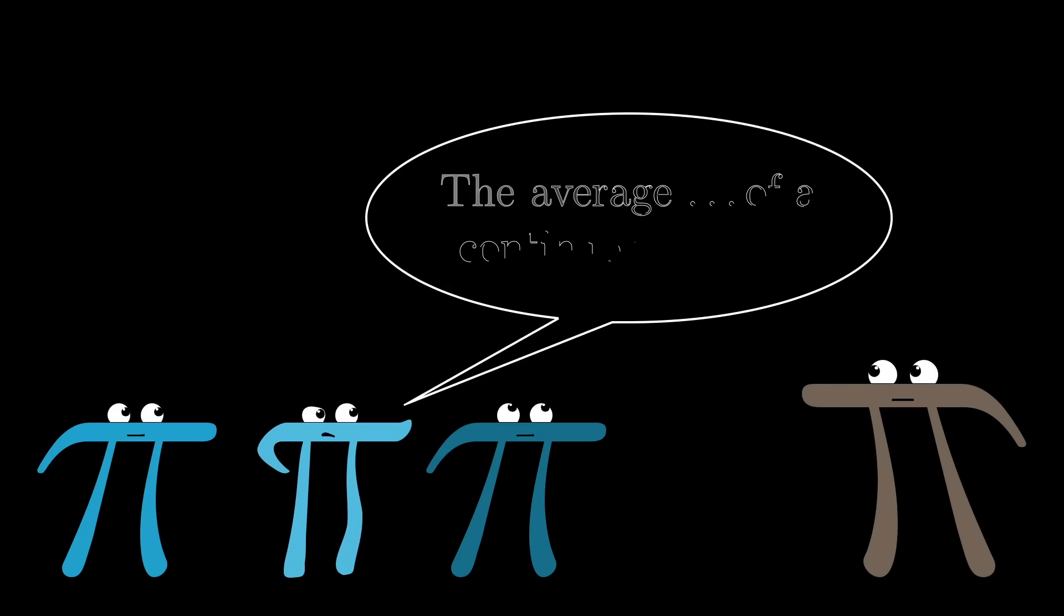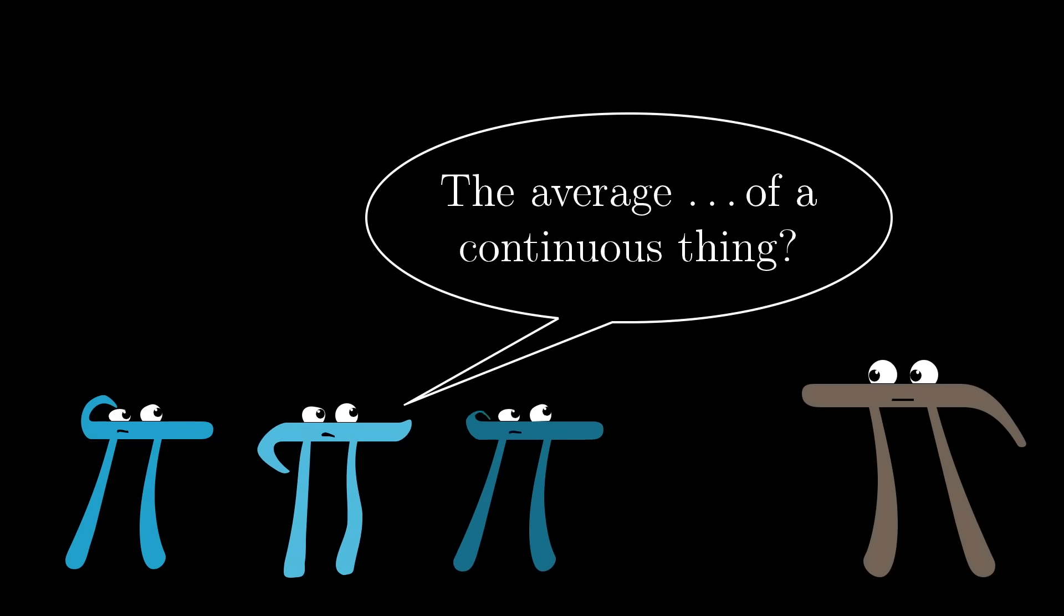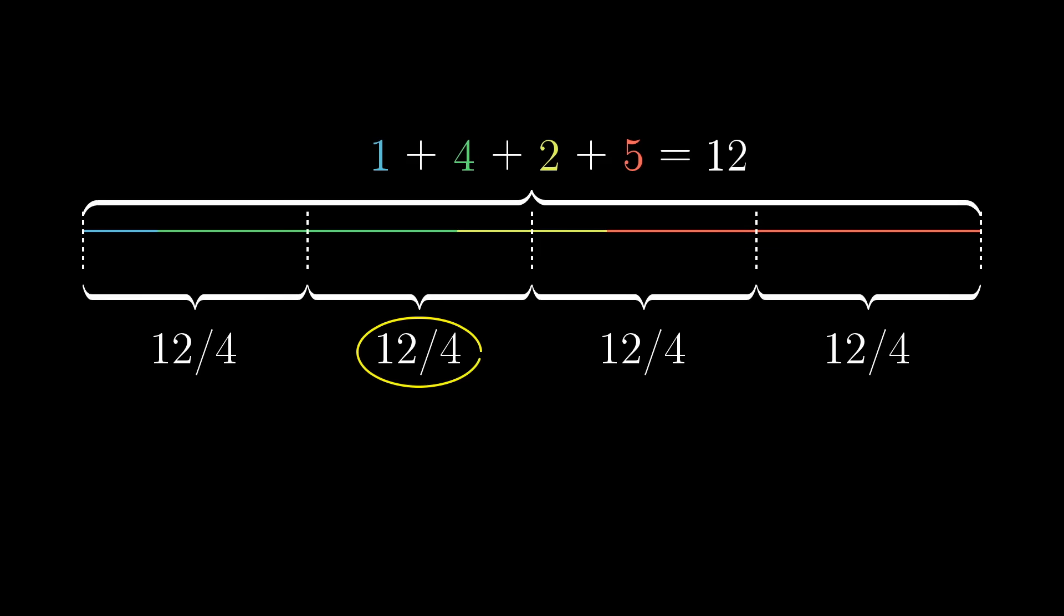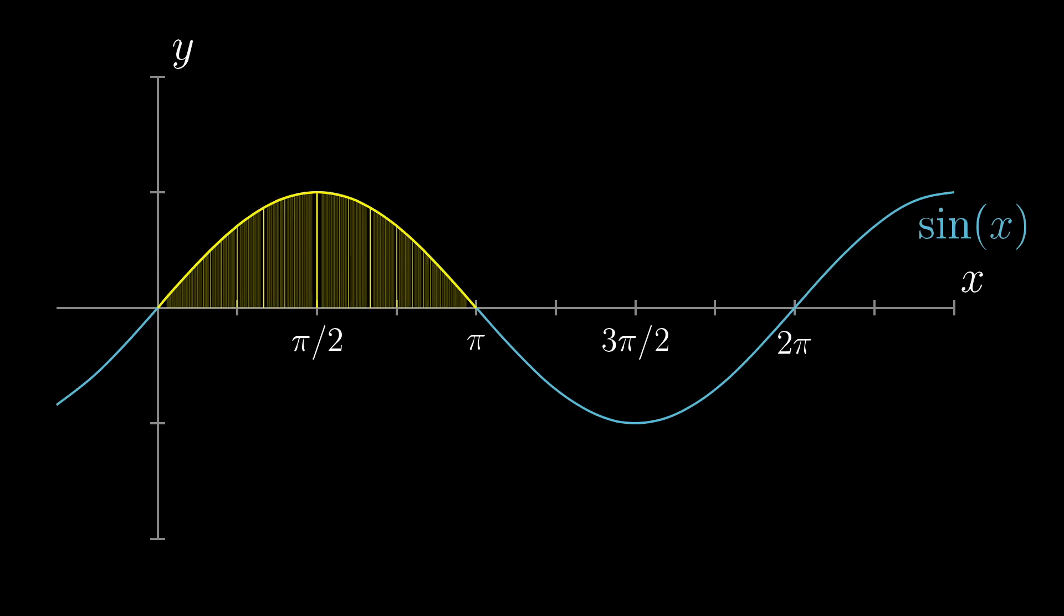It's kind of a weird question to think about though, isn't it? The average of a continuous variable. Usually with averages we think of a finite number of variables, where you can add them all up and divide that sum by how many there are. But there are infinitely many values of sine of x between zero and pi, and it's not like we can just add up all of those numbers and divide by infinity.